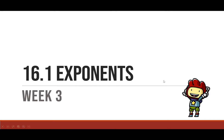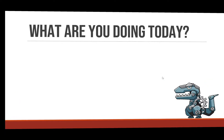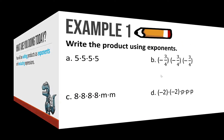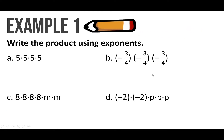Alright, what's up guys! Today we are going to learn 16.1 Exponents. You will be writing products as exponents and evaluating expressions. This is easy stuff — a lot of what we're doing today is based on counting. So it says write the product using exponents. Take a look at letter A: you have 5 times 5 times 5 times 5 — easy, that's just 5 to the 4th power. For letter B, you have negative three-fourths times negative three-fourths times negative three-fourths.